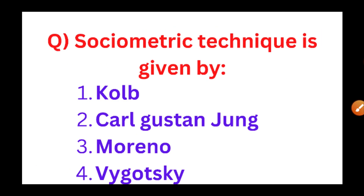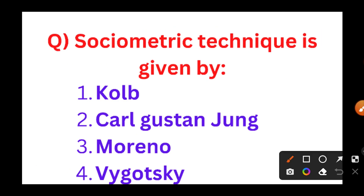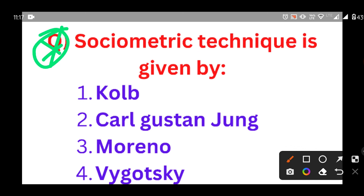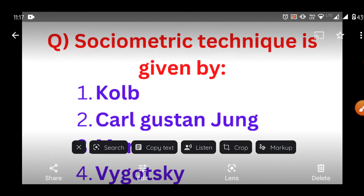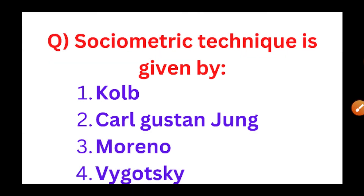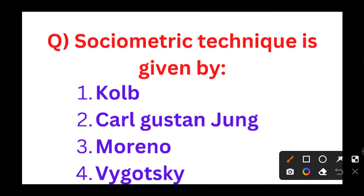The next question, which is also very important: Sociometric technique is given by. The options are Kolb, Carl Gustav Jung, Moreno, and Vygotsky. The sociometric technique is given by Moreno.